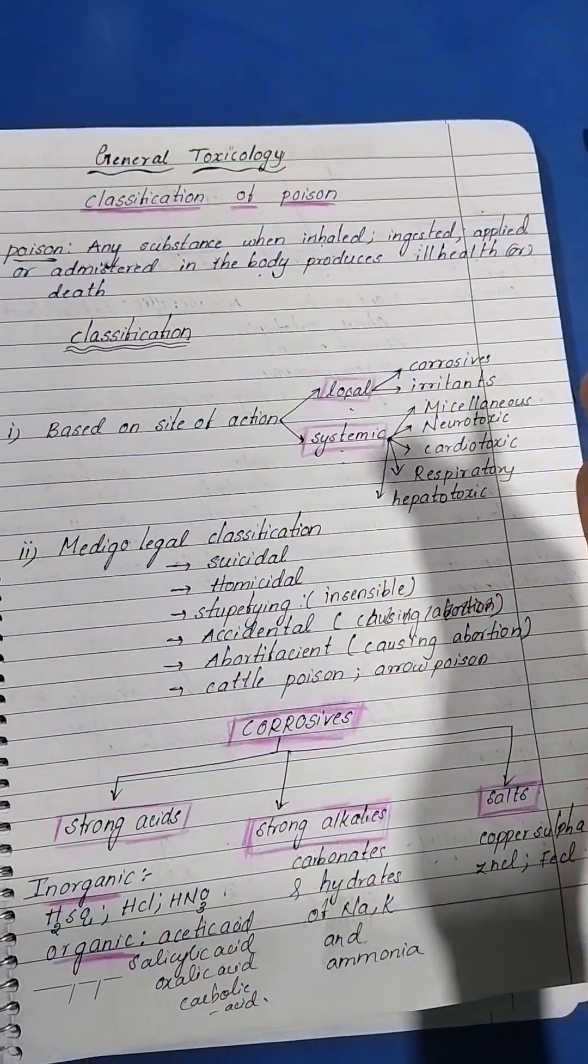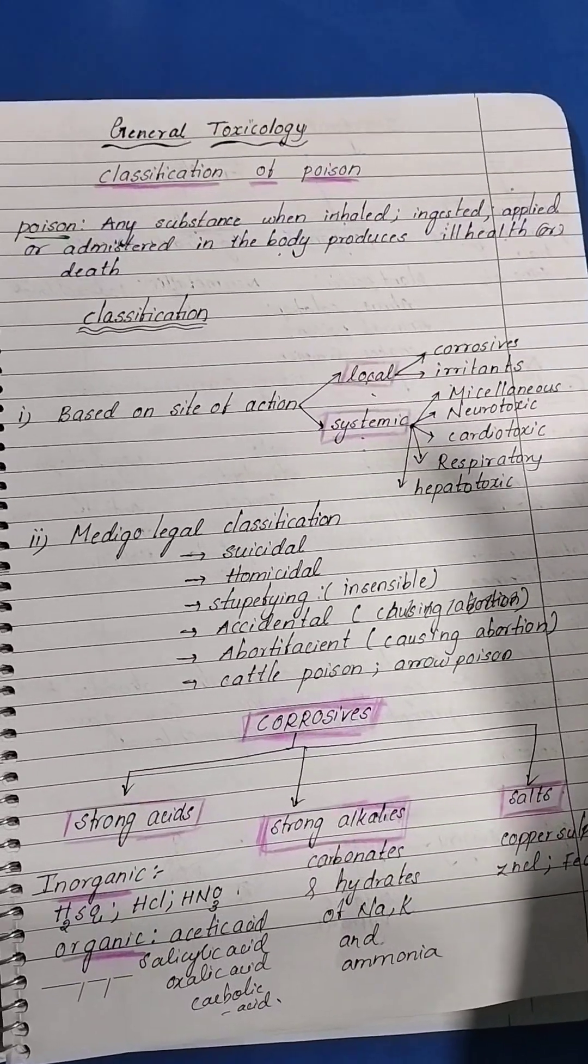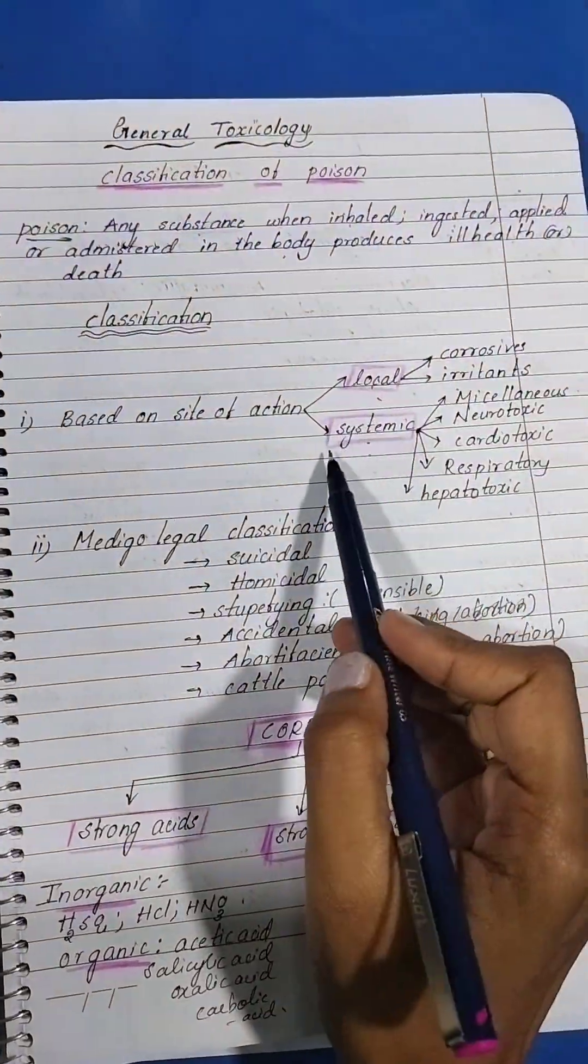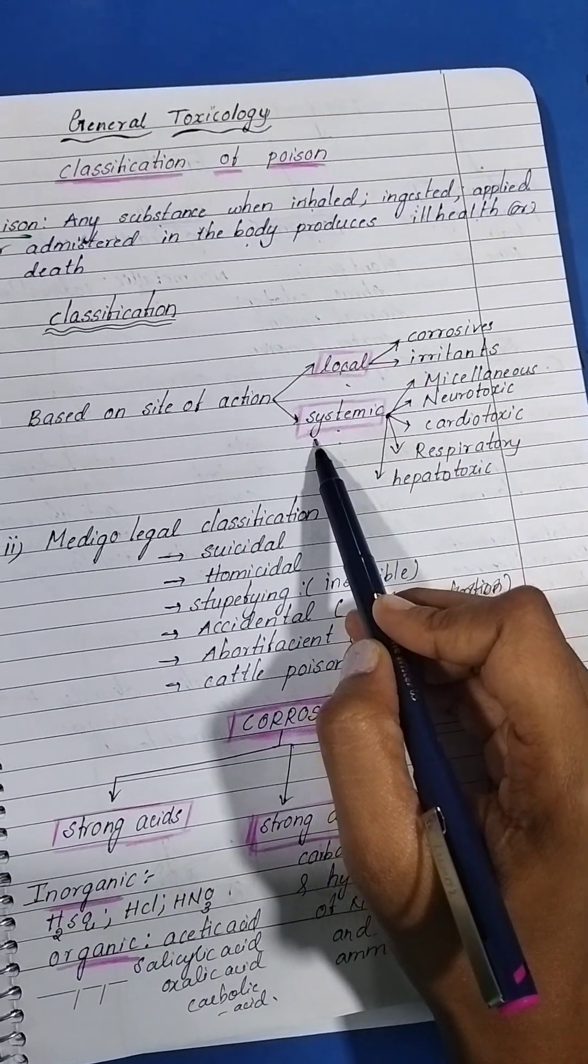The poisons that produce a corrosive function are called corrosives, and if they cause irritation they are known as irritants. Next is systemic, based on the system on which they act.